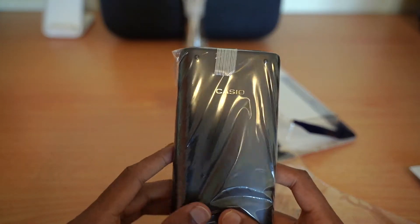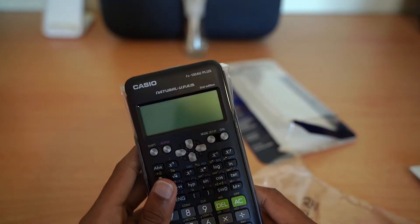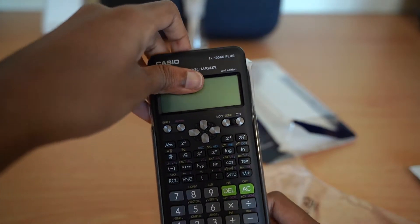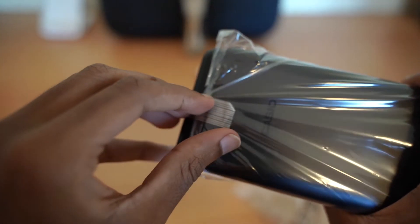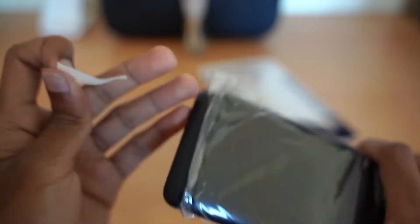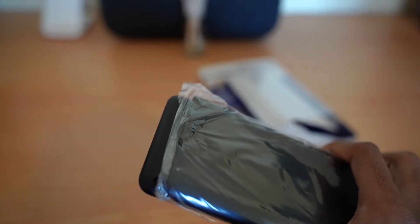This is the calculator. As you can see the Casio logo. This is the other side. Like this. There we go. There is a freaking good sound of the opening.